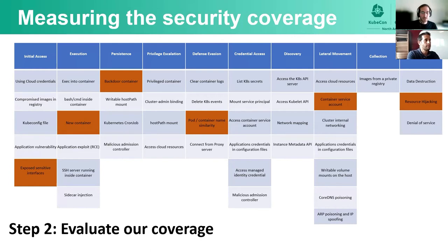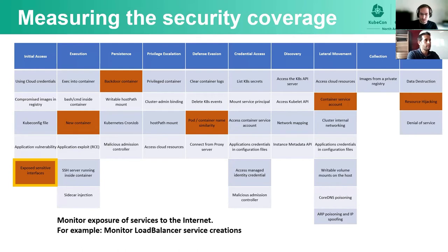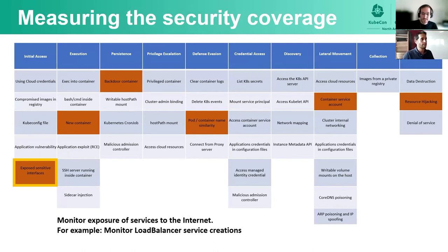Step two is to evaluate our coverage against those techniques we just marked. For exposed sensitive interfaces, we can monitor exposure of services to the internet — for example, monitor load balancer service creations, ingress objects, or in OpenShift, routes. I really want to emphasize this point: a very large portion of the attacks we see against Kubernetes clusters start with an exposed sensitive interface. It affects everyone — from small organizations and individuals to huge organizations with very large information security departments. Misconfiguration in Kubernetes is a serious problem. It is absolutely crucial to monitor your environment for such misconfigurations, and when you find one, to act immediately, because once it happens, your cluster will become compromised very quickly.